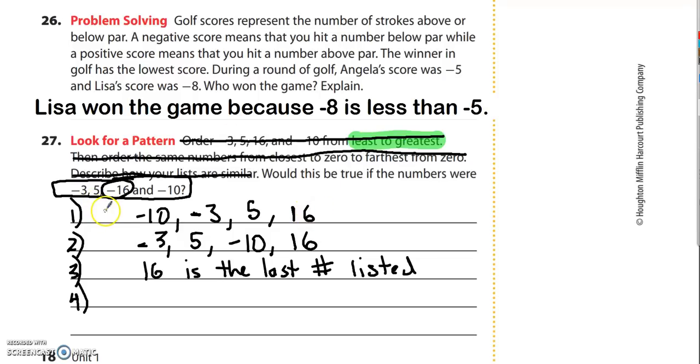And then my third statement is 16 is the last number listed, wouldn't be true anymore. So the last question says would this be true if the numbers were negative 3, 5, negative 16, and negative 10? The answer is no.